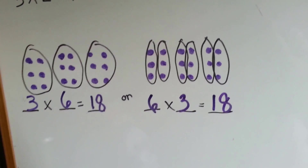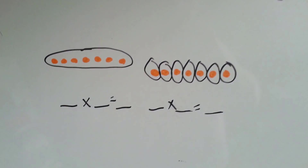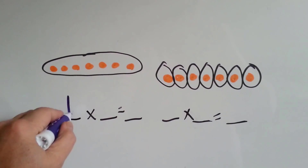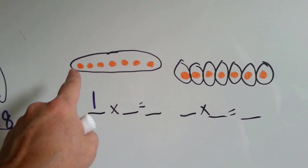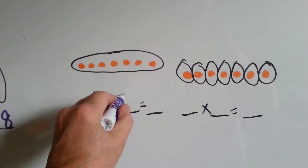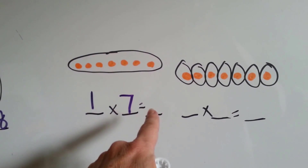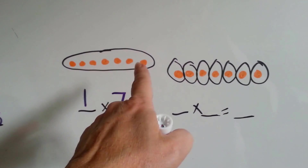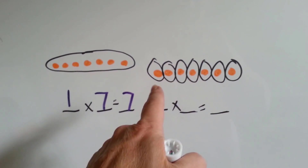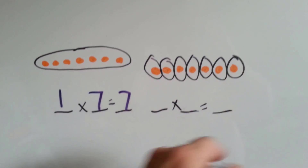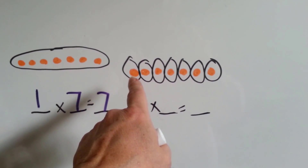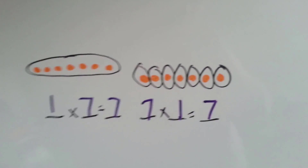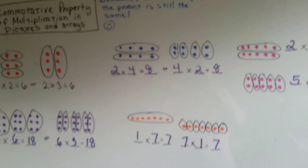Commutative property — backwards or forwards, the product or the answer is the same. Here's our last one. How many black circles are here? Just one. How many orange dots are inside that circle? Seven. One times seven equals seven. Any number times one is itself. Now we've got seven black circles — how many dots are in each circle? Just one. One times seven equals seven, and seven times one equals seven. Backwards or forwards, the product or the answer is still the same. And that's the commutative property.